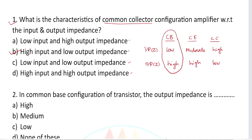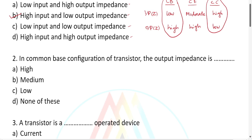For common base: input impedance is low and output impedance is high. For common emitter: input impedance is moderate and output impedance is high. Question number two: In common base configuration of a transistor, the output impedance is — high, medium, low, or none of these? The output impedance in common base configuration is high. The correct answer is option A.